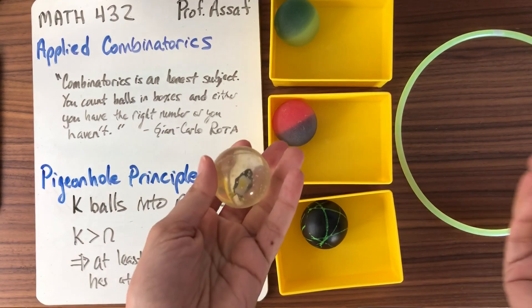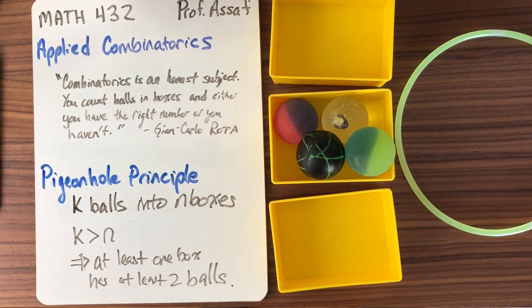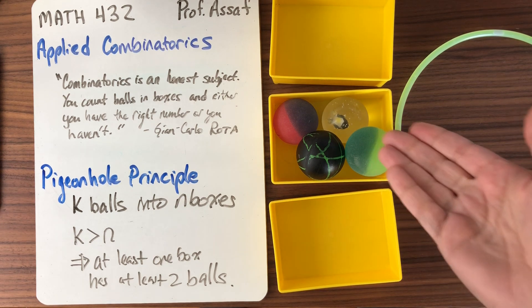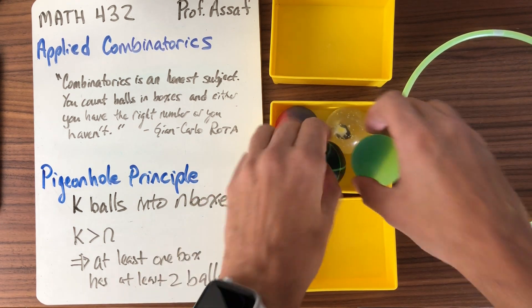I've got a ball here. I've got to do something. I could actually put all the balls into one box. And now it's true that at least one box has at least two balls. In fact, this box has four balls.